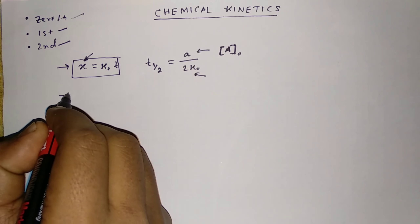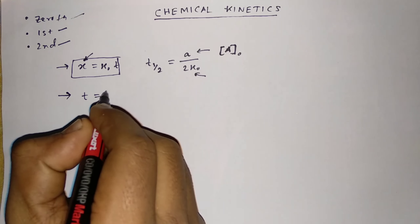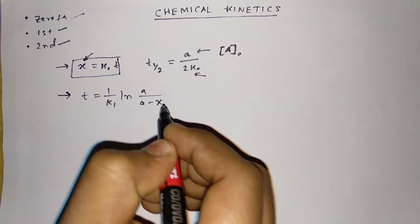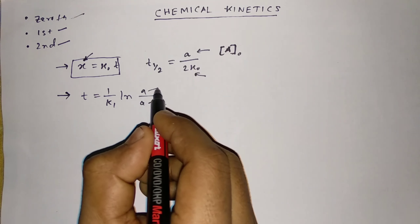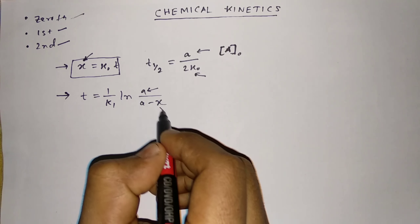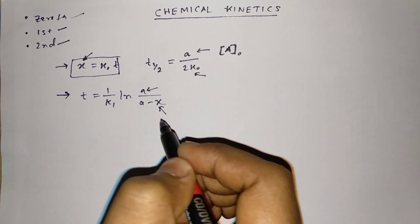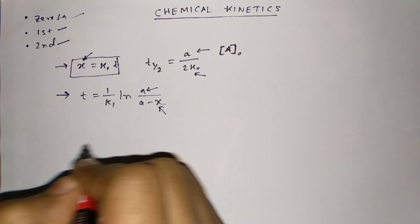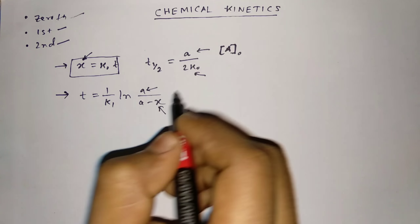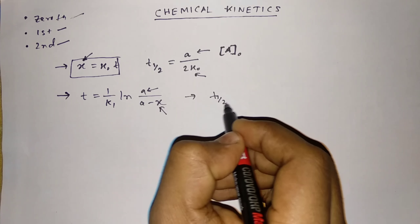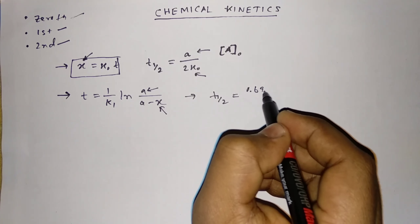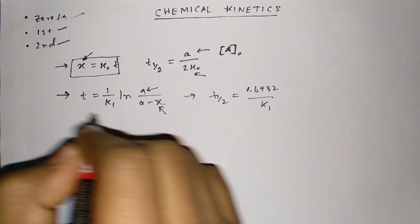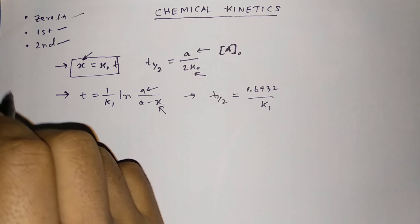For the first order reaction, the rate equation is: t = (1/k₁) ln(A / A−x). Here A is the initial concentration of the reactant, x is the concentration of product after time t, and k₁ is the rate constant. Along with this, remember the half-life equation: t½ = 0.6932 / k₁. These two equations you need to remember for the first order rate equation.